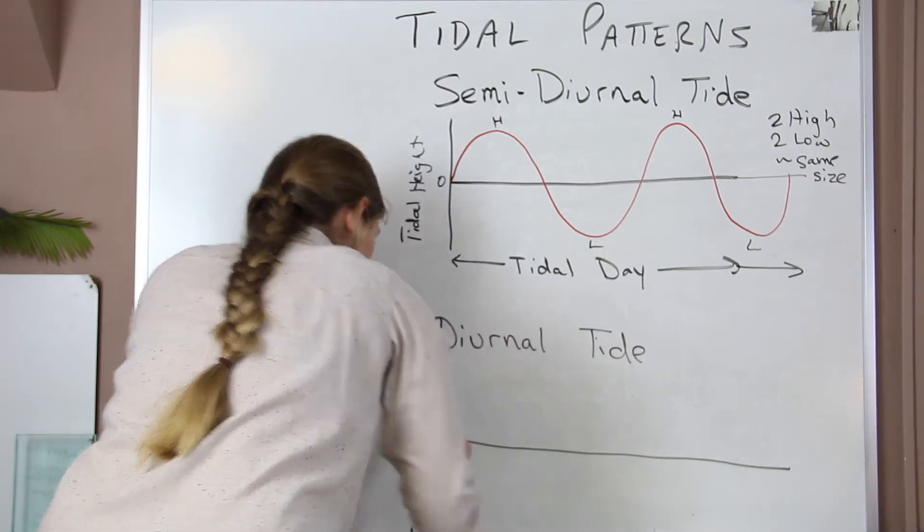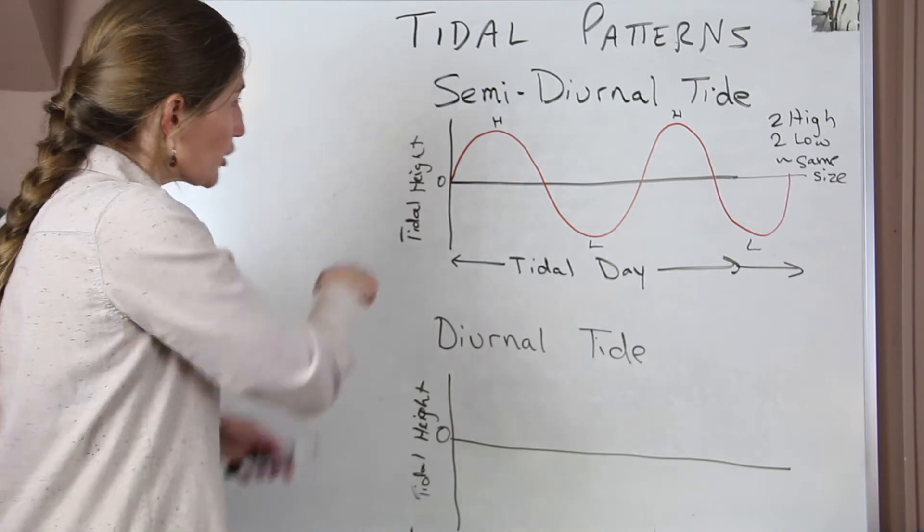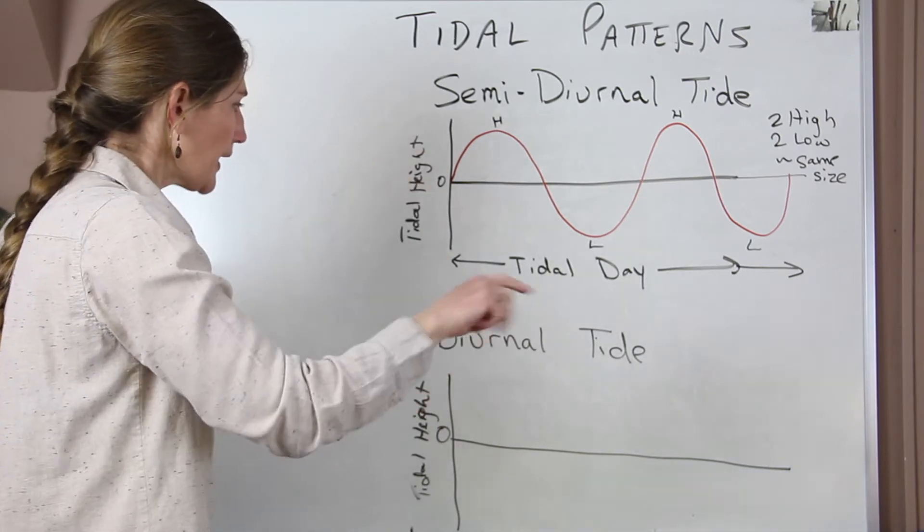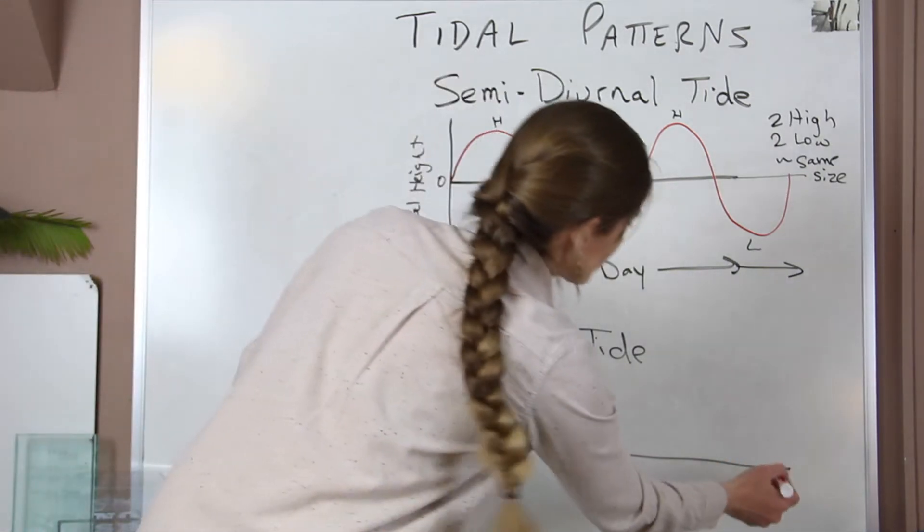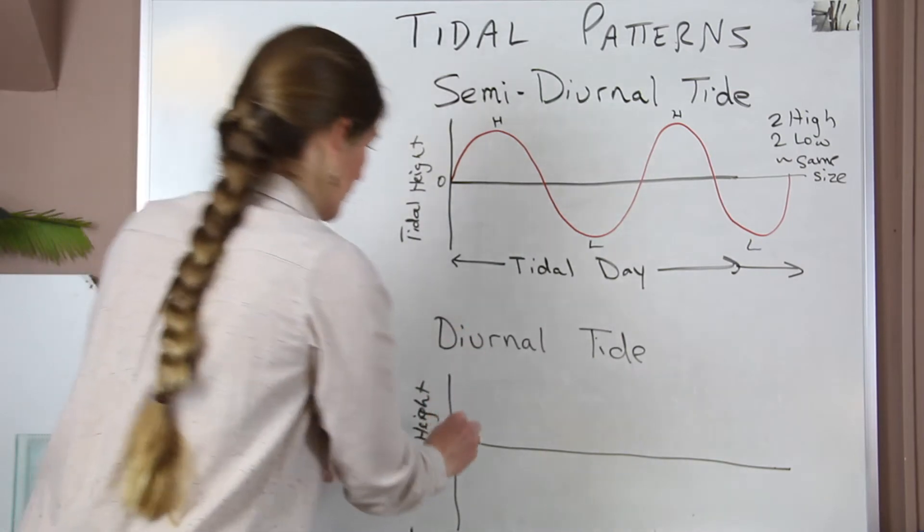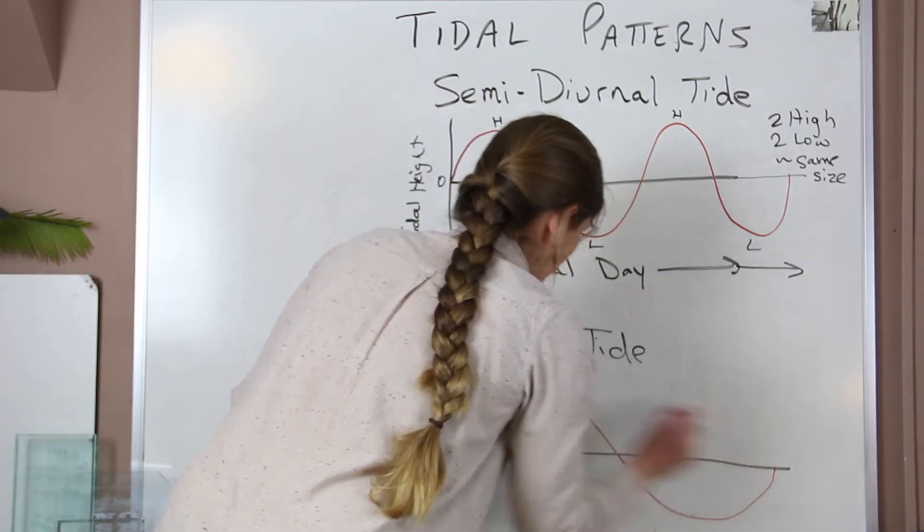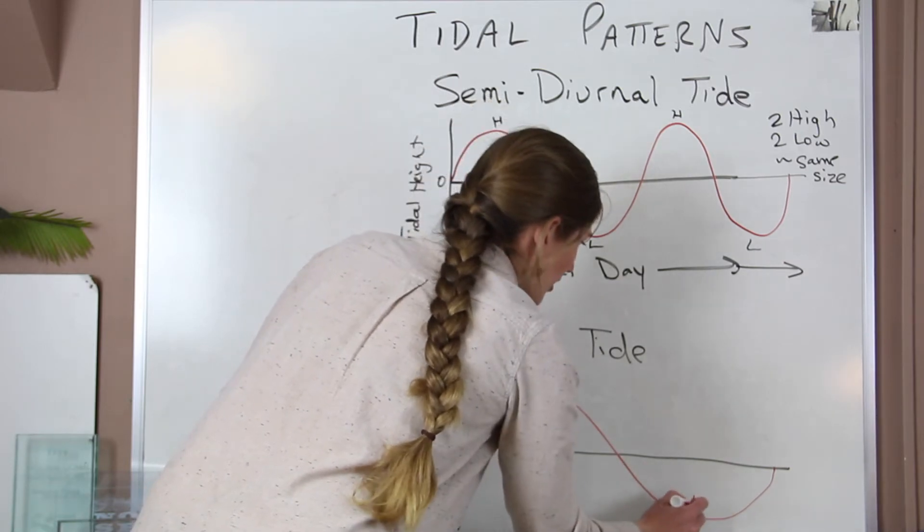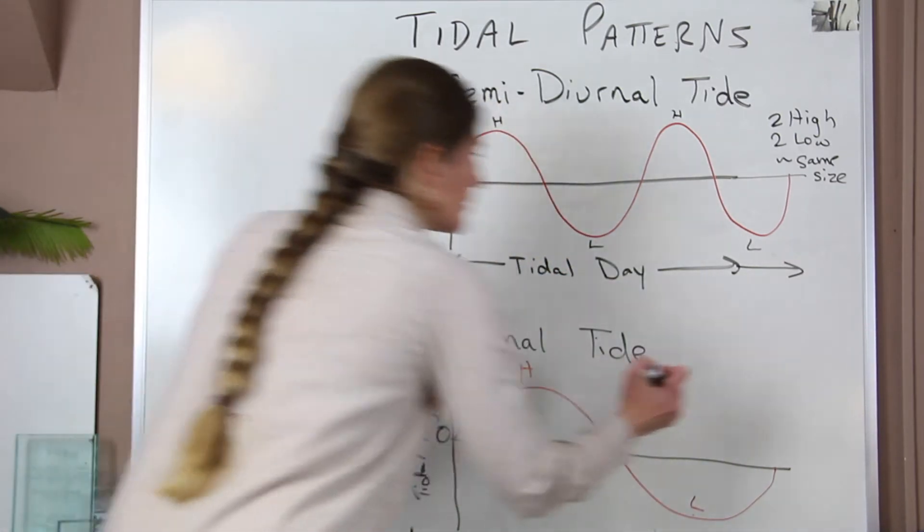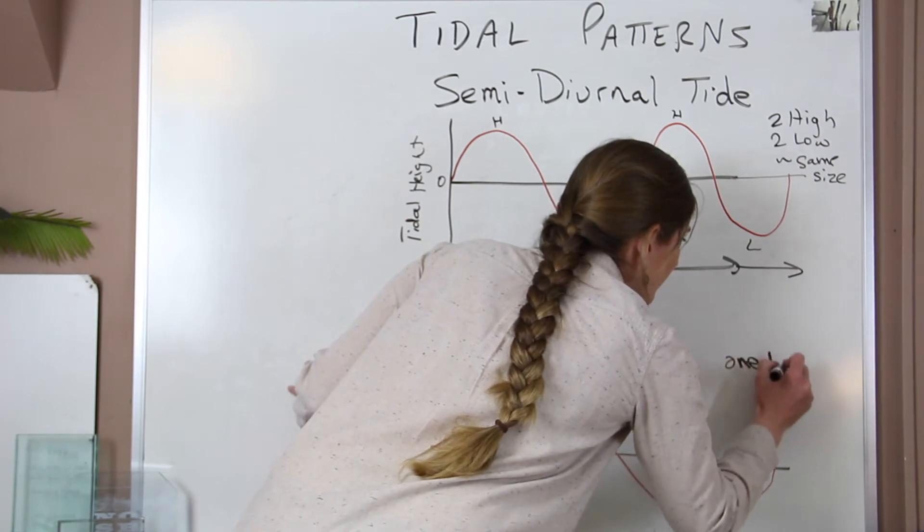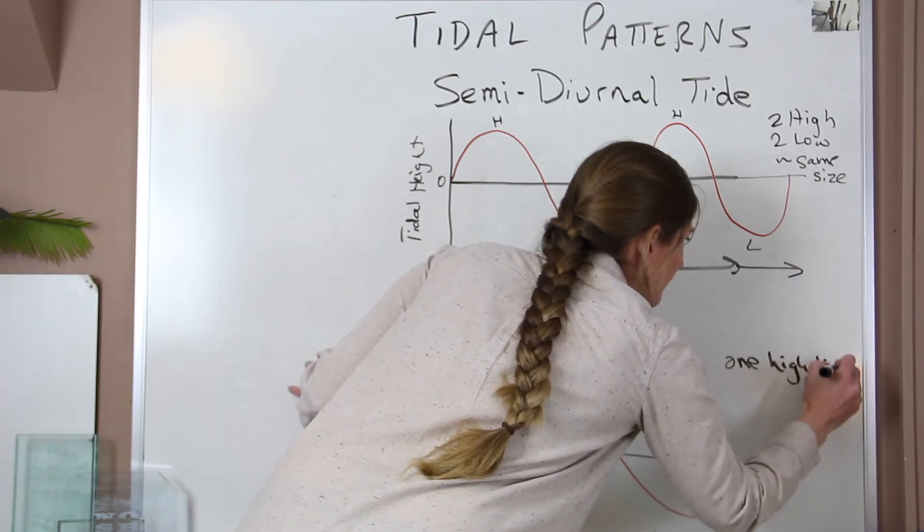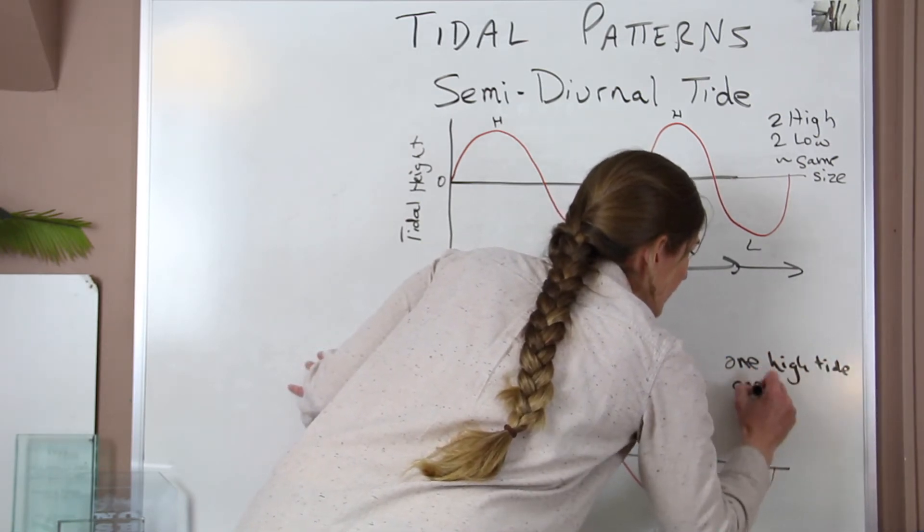On the side with the zero in the middle, but in a diurnal tide we have one high and one low per day. So we have our high and our low. So we have one high tide, one low tide.